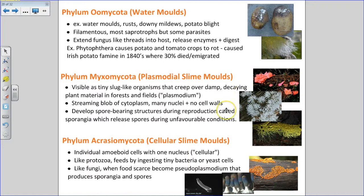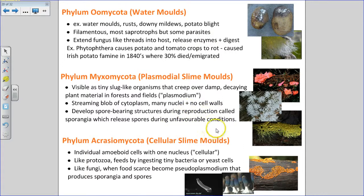The second group — phylum myxomycata — includes the plasmodial slime molds. They're slug-like organisms that creep over damp, decaying plant material in forests and fields as a streaming blob of cytoplasm with many nuclei and no cell walls. They develop spore-bearing structures resembling sporangia and release spores when conditions are unfavorable — that's when they're like a fungus. The first group feeds like fungi through extracellular digestion.